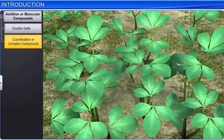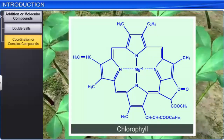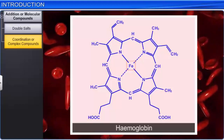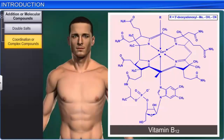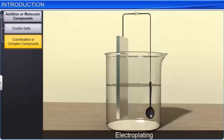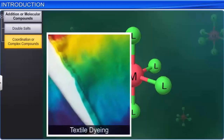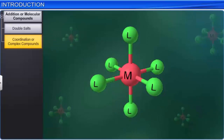Naturally occurring complex compounds are vital to living organisms. For example, chlorophyll is a coordination complex of magnesium, hemoglobin is a coordination complex of iron, and vitamin B12 is a coordination complex of cobalt. Complex compounds find extensive use in electroplating, metallurgical processes, textile dyeing, and medicinal chemistry. Apart from that, they also find applications as industrial catalysts and analytical reagents.